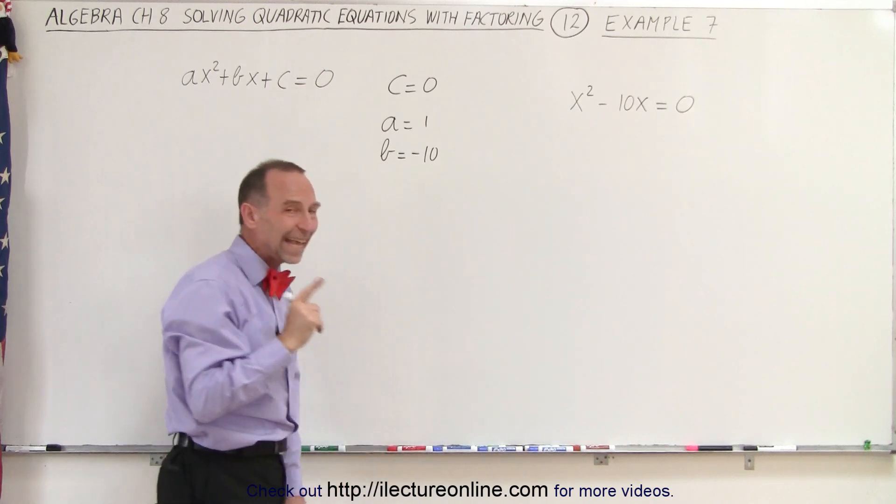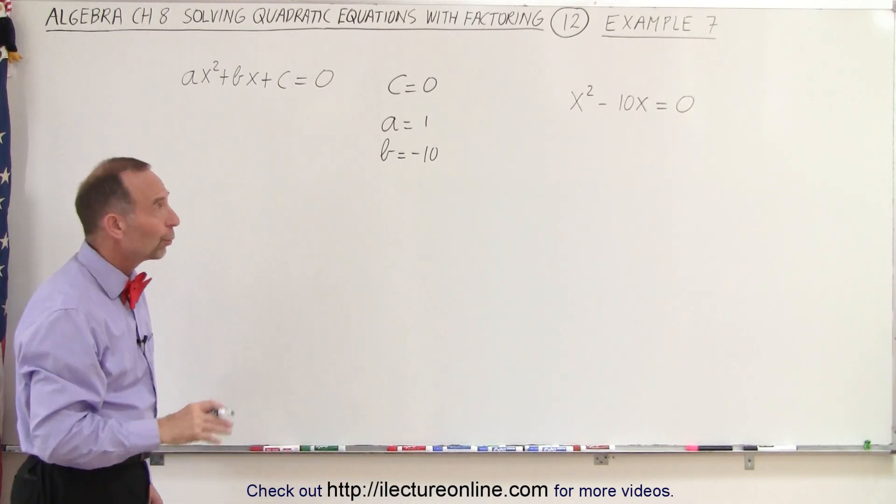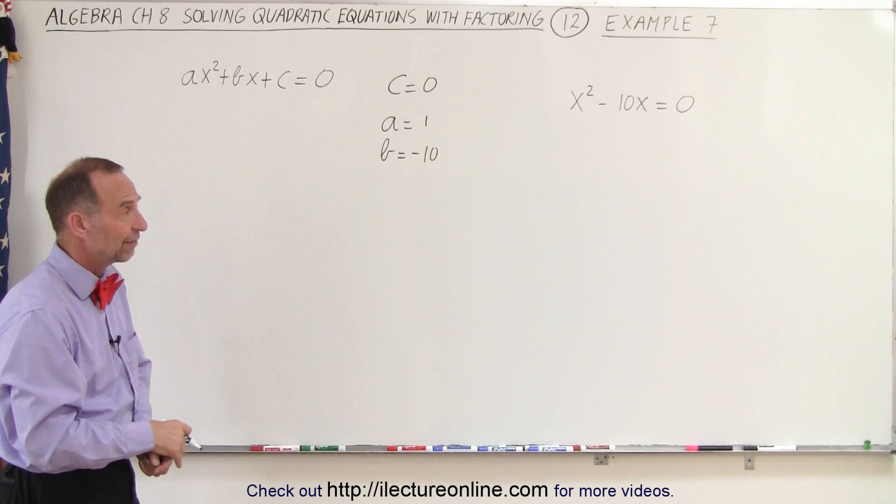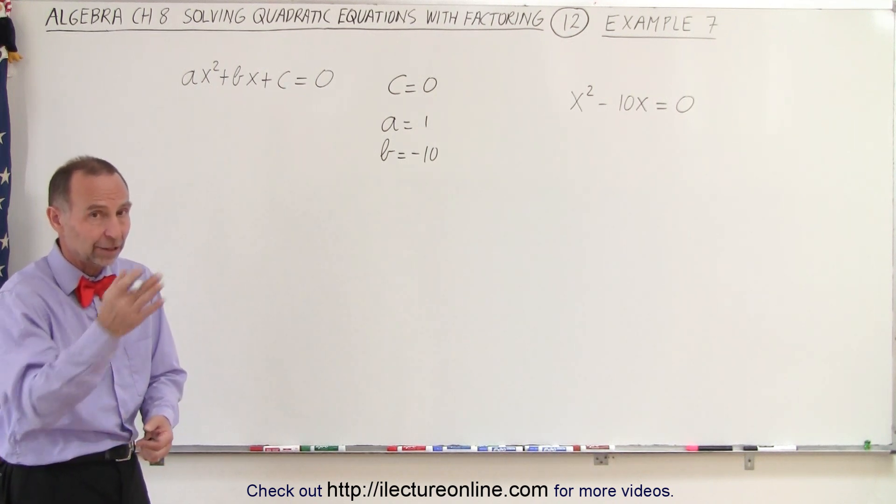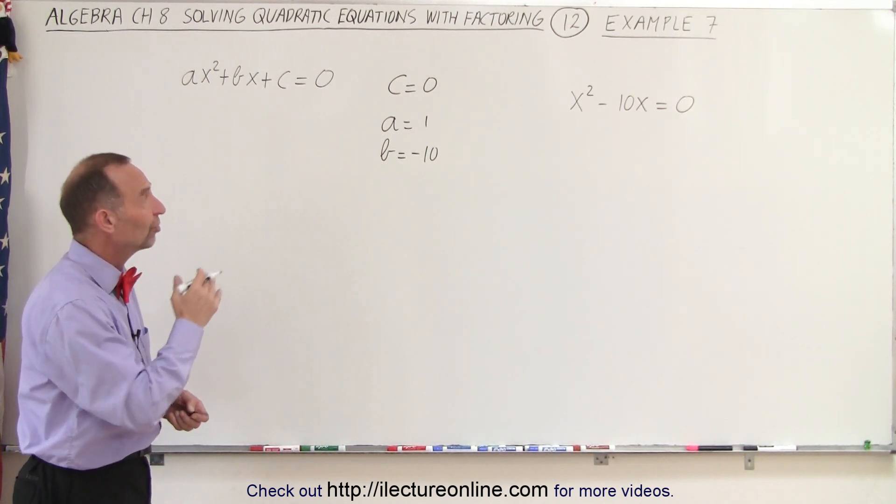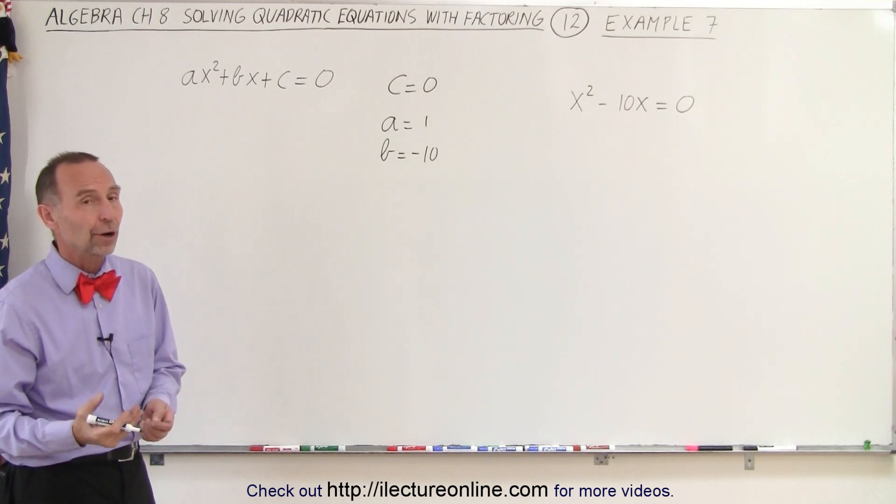As long as A is not equal to zero, we do have a quadratic equation. So we can have examples where B is equal to zero, like in the previous video, or where C is equal to zero, like in this video.